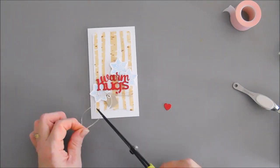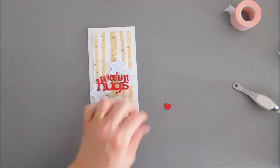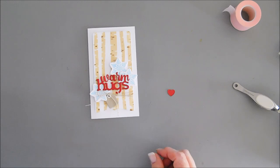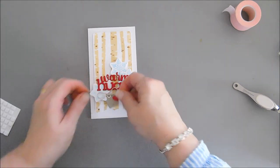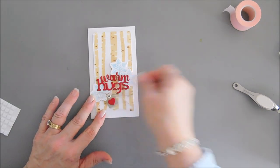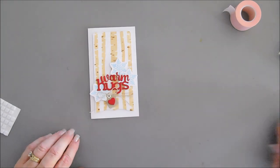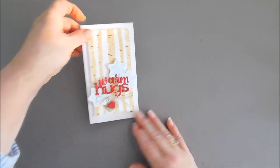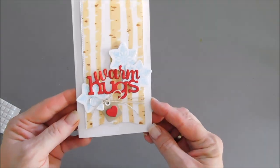I'm going to trim off the twine here, and then I'm going to take my little heart that we die cut and add a small foam square behind here. This is going to go in the center of our little charm. How fun is that!